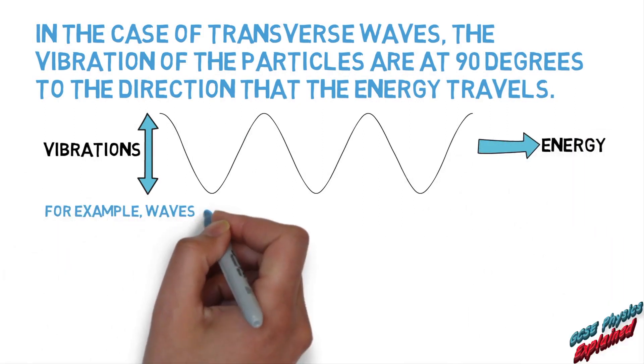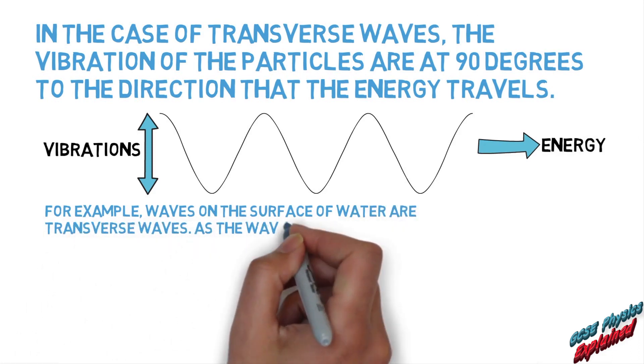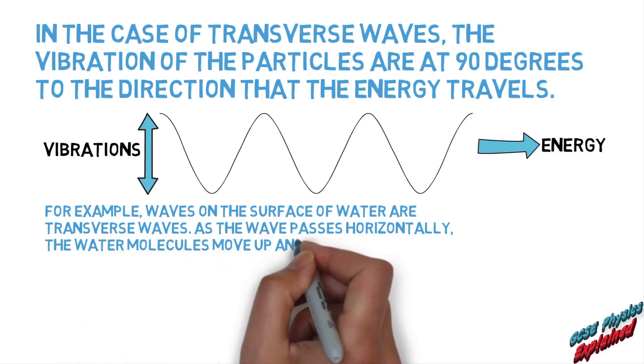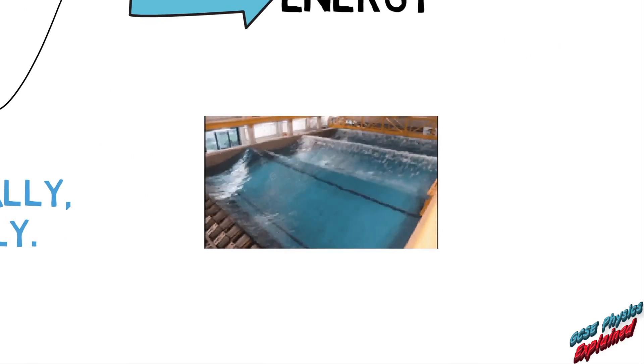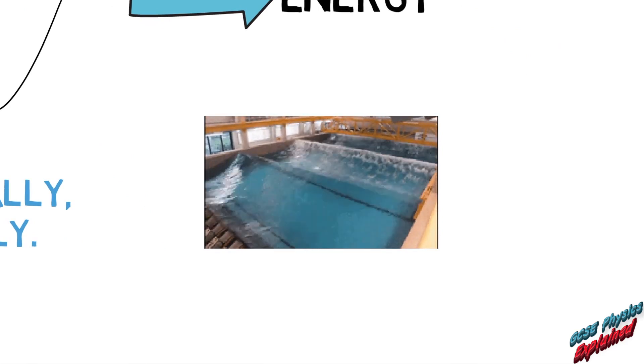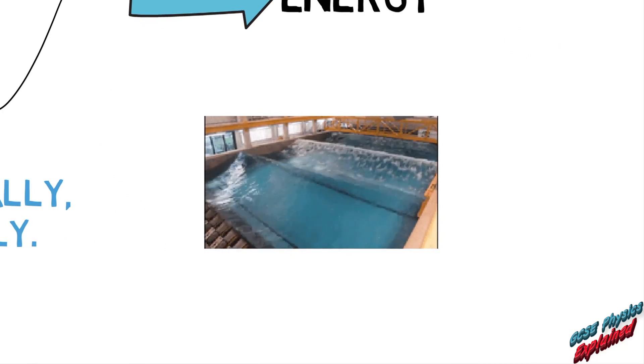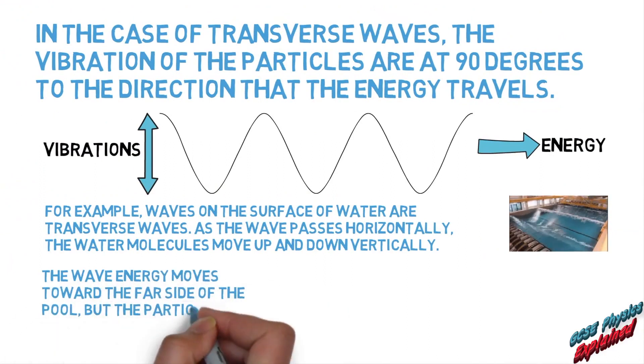For example, waves on the surface of water are transverse waves. As the wave passes horizontally, the water molecules move up and down vertically. The wave energy moves towards the far side of the pool, but the particles do not. They simply vibrate about a fixed position.